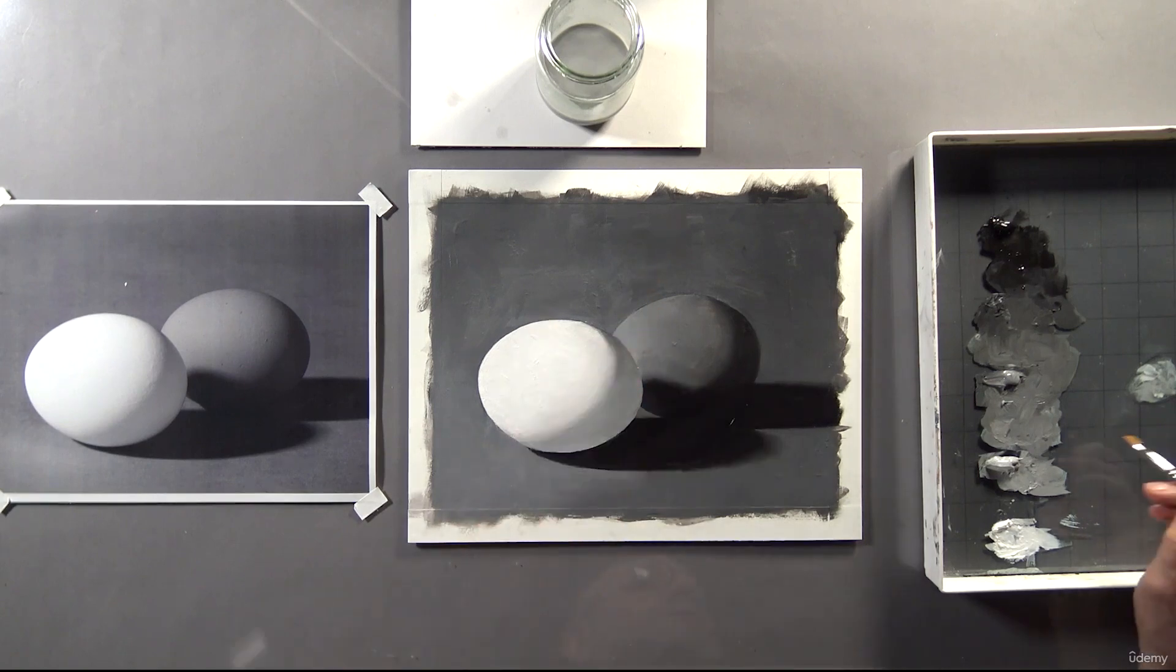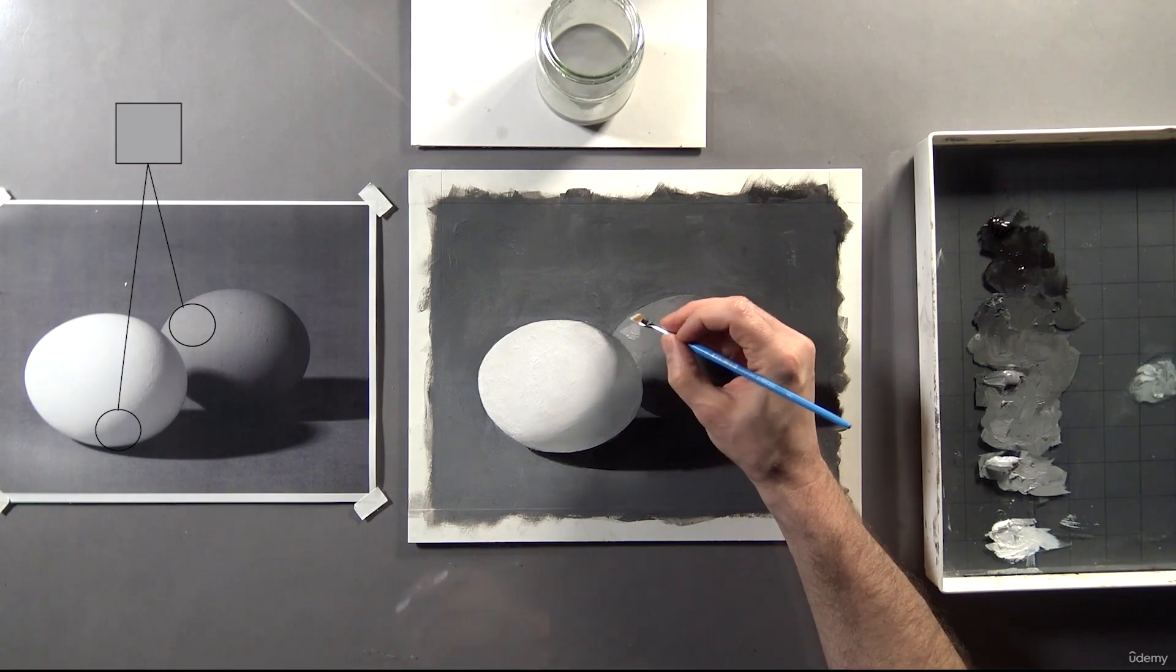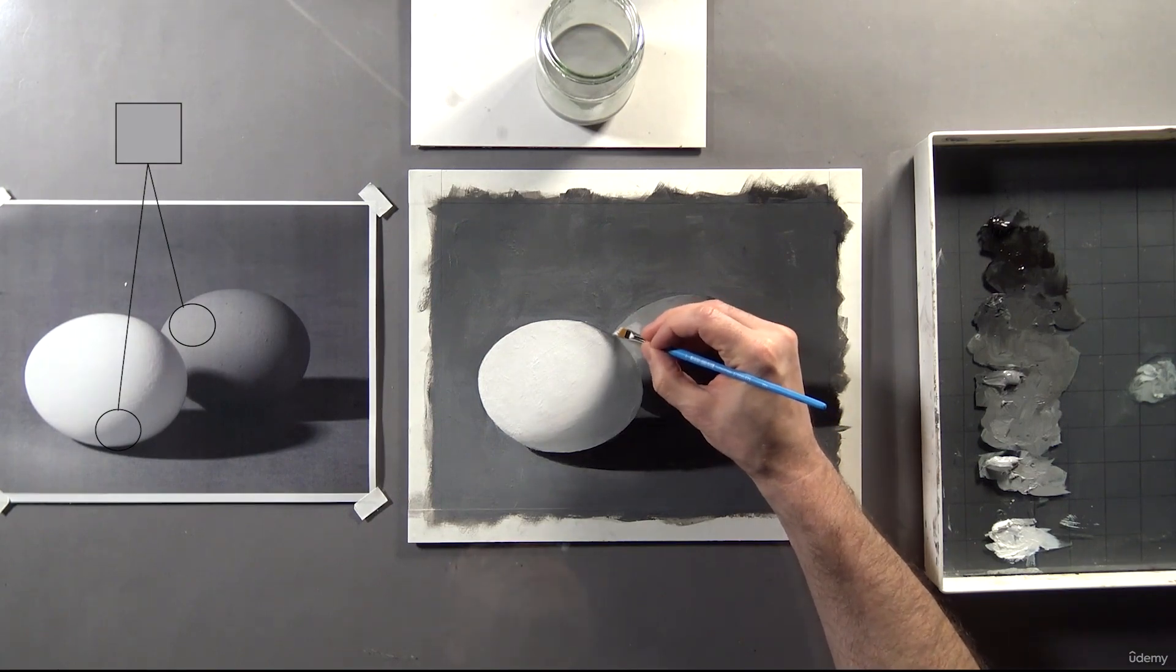Here, for example, the left side of the egg should be a bit lighter. And since it's supposed to match the value of the shadow on the white egg, I'm going to try starting with second value.